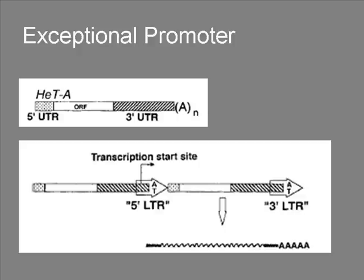HAT-A shows a sense of togetherness — it takes two of them to work. One element provides a promoter, the other element serves as a template for transcription. This also explains why these elements occur in a head-to-tail array: they need this distinct array to be transcribed. Each HAT-A element must wait for another HAT-A to transpose to its 5' end to acquire a complete copy of a new promoter so it can be transcribed.